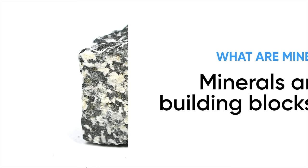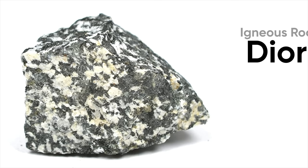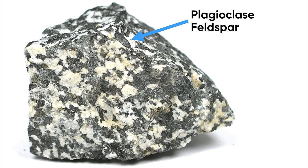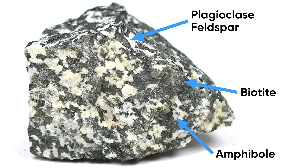Let's take a look at a rock. This is an igneous rock known as diorite. What probably jumps out at you are all the different speckles of color — the dark grays, the whites, the orange. And what those are are actual mineral crystals. The rock diorite contains mineral crystals of plagioclase feldspar, biotite mica, amphibole, quartz, and others. So when we're talking about minerals, let's keep in mind that they are what make up the rocks on the surface of the Earth.